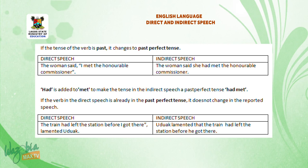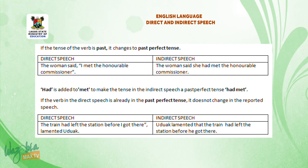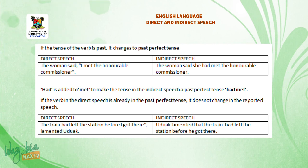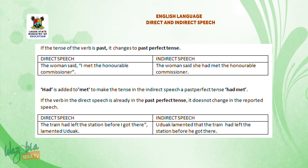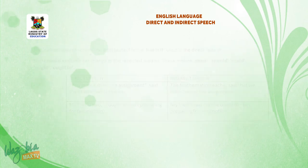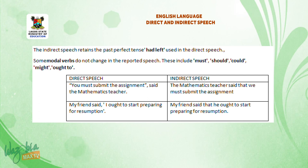If the verb in the direct speech is already in the past perfect tense, it does not change in the reported speech. 'The train had left the station before I got there,' lamented Udrak. — Udrak lamented that the train had left the station before he got there. The indirect speech retains the past perfect tense 'had left' used in the direct speech.